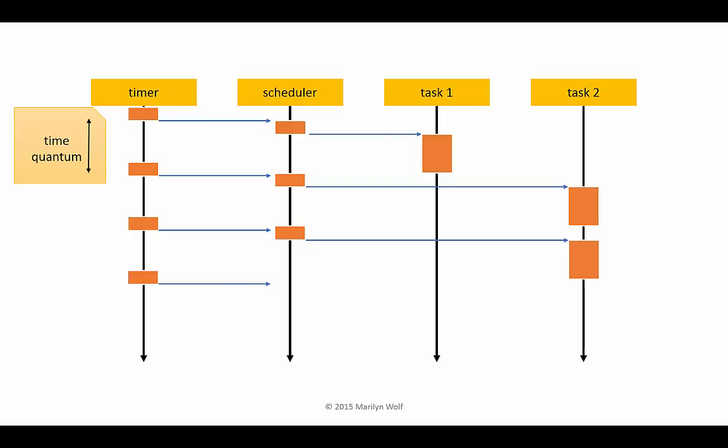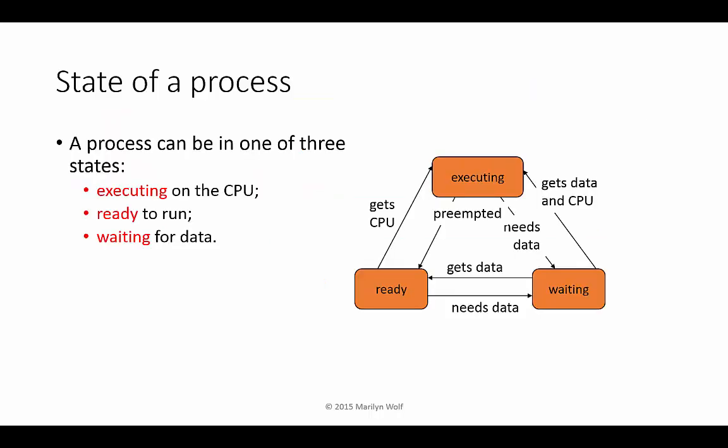The timer interrupts again, runs the scheduler, which then decides what to run next. In this example, task one is what it chooses. The operating system assigns every process to one of three states: waiting, ready, or executing.